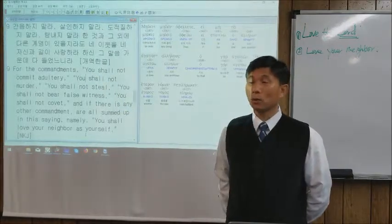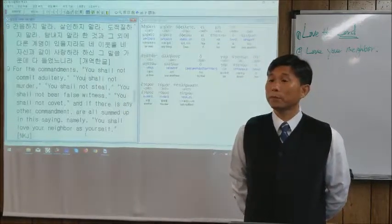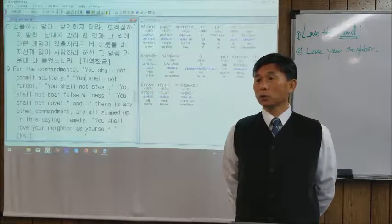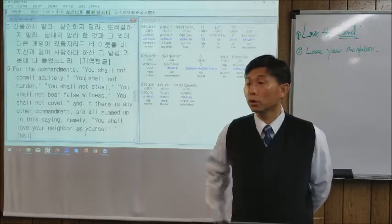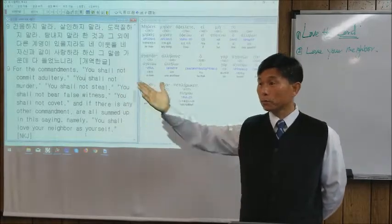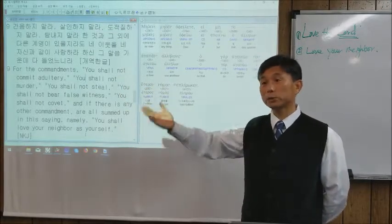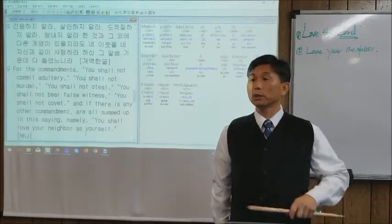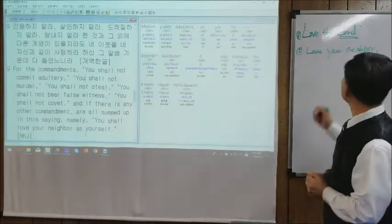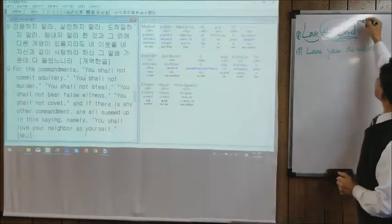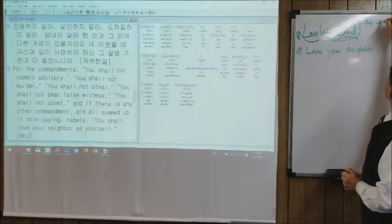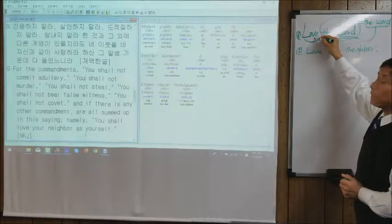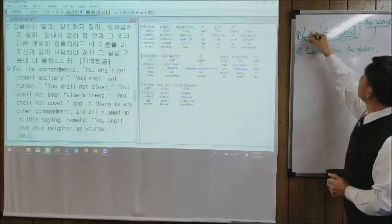What does that mean? If you do not have the obligation of loving, you are committing adultery — you don't give the word of God to the person. You are murdering your brothers — not giving the word of God. You are stealing. All those commandments fall under: if you do not love, you are breaking them all.